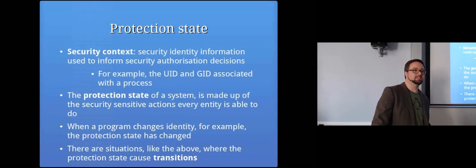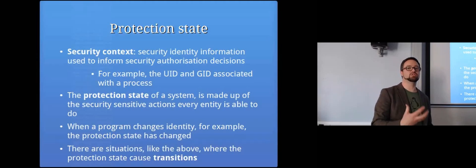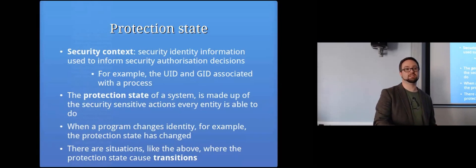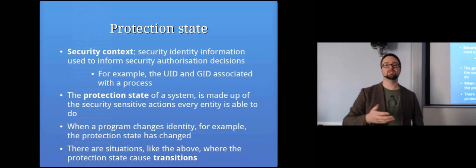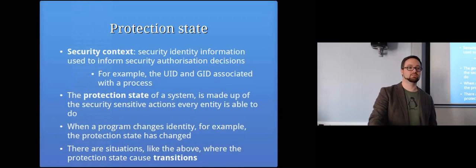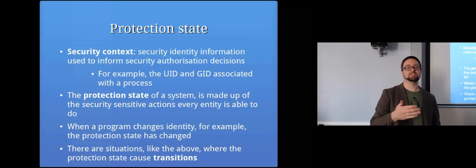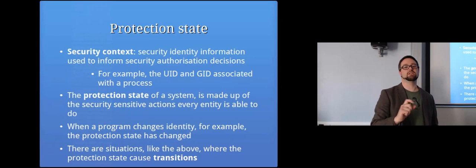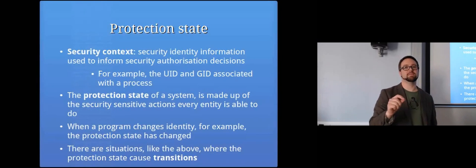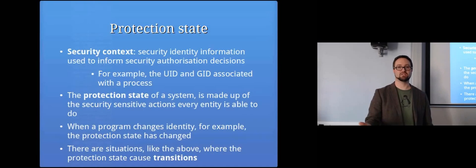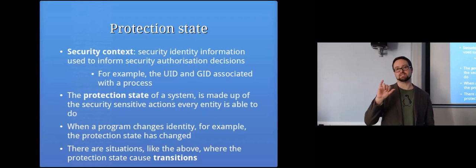The protection state is the complete state of the computer in terms of all processes and identities associated with them. Security context is the identity or information assigned to each subject used to inform access decisions. In the door analogy, checking name badges gives you the security context — the information used to make the decision. On a Linux system, that's the UID, GID, and other security information associated with each process.